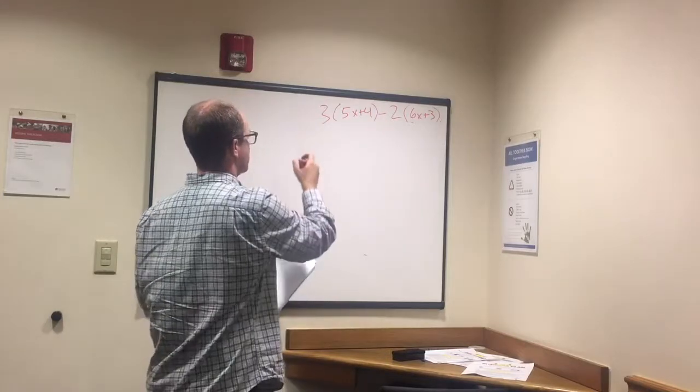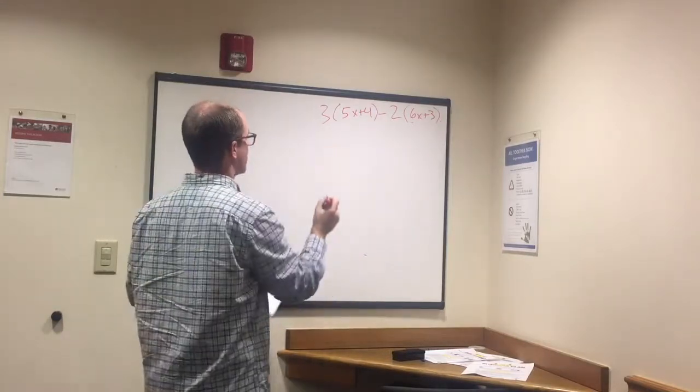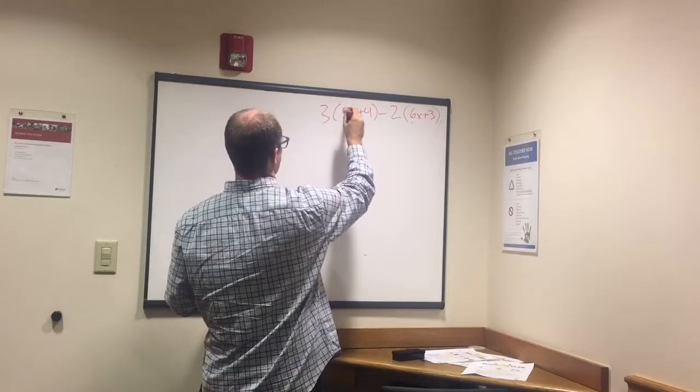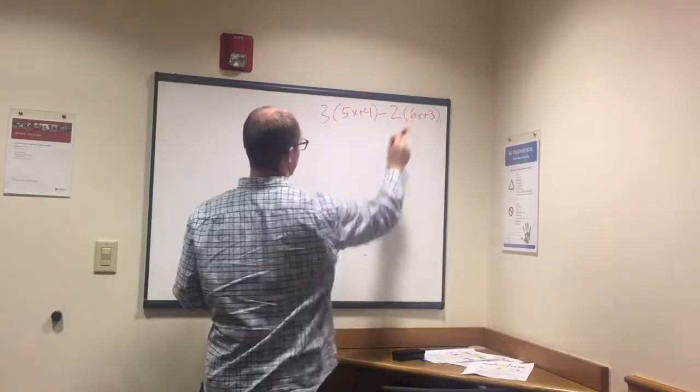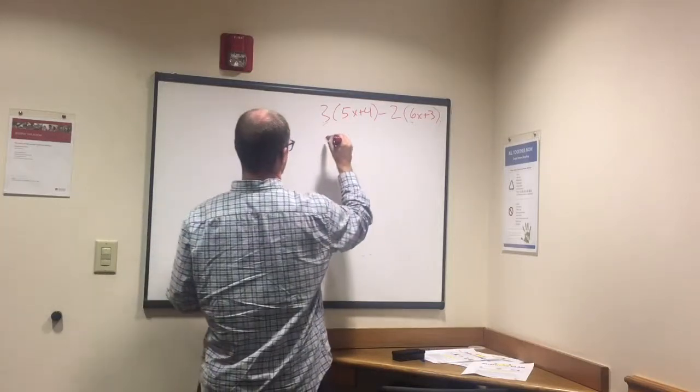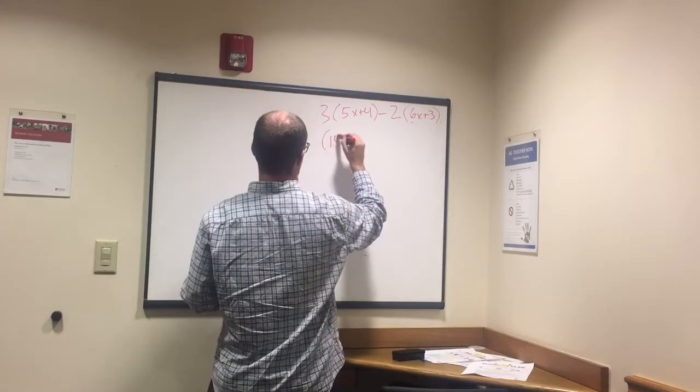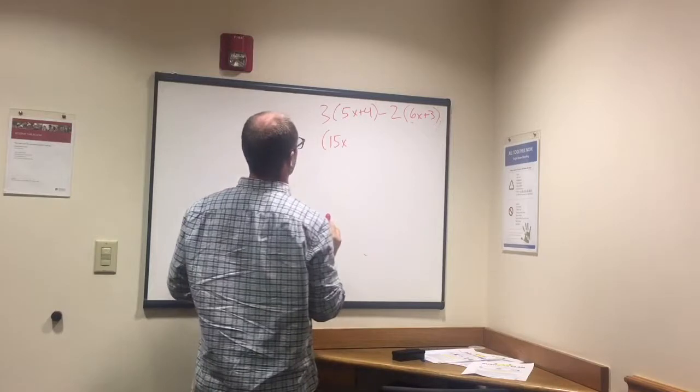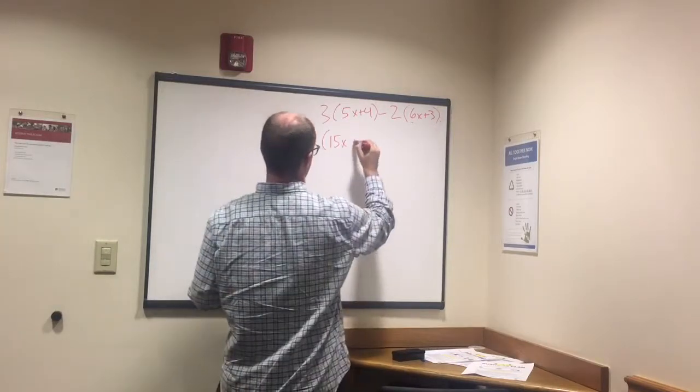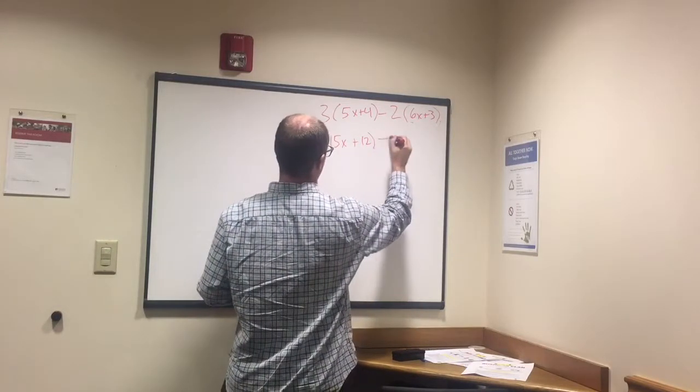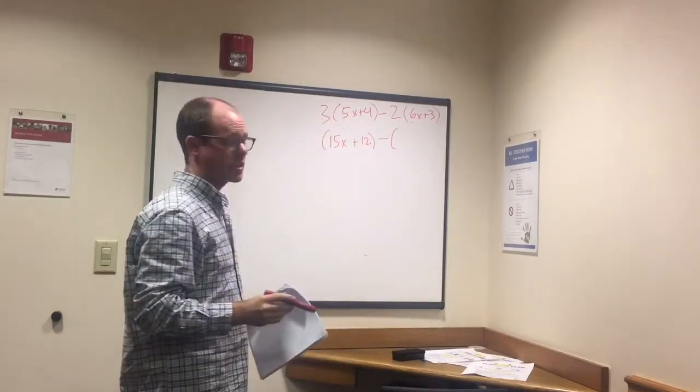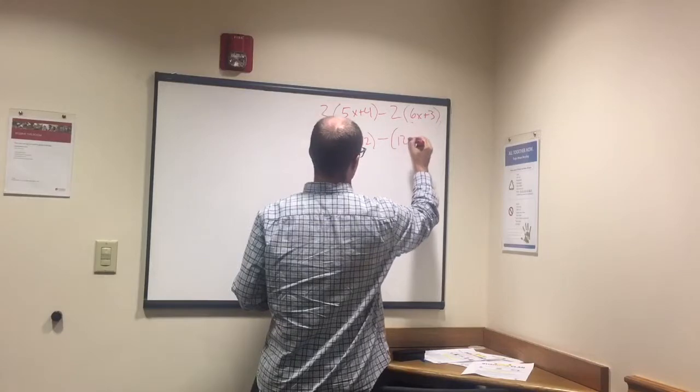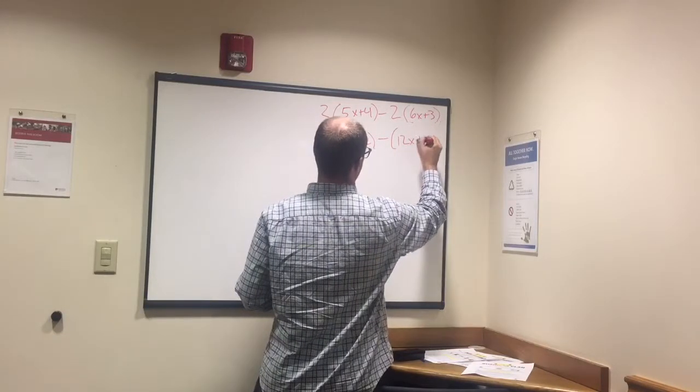So what we're going to do is use distributive property then subtract. So that means I'm going to multiply 3 times the 5x plus 3 times the 4, and the same over here. So 3 times 5x is 15x. 3 times 4 is 12, so plus 12 minus. Now we have 2 times 6x, so 12x, and 2 times 3 is 6.